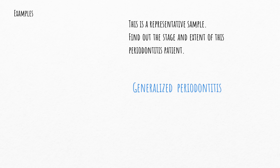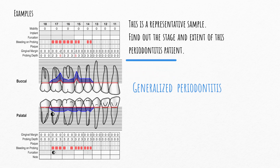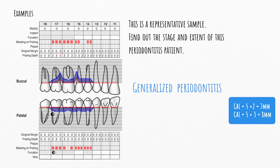What if recession and furcation were given? For example, if there is a recession of 2 on the 1.7 and recession of 3 on the 1.5, and furcation class 2 on the 1.7, we should use this equation: CAL equals pocket depth plus recession, recession being the distance from the cementoenamel junction to the free gingival margin. Adding pocket depth of 5 mm plus recession of 2 gives CAL of 7; CAL on the 1.5 will be 8, so it's either stage 3 or 4. Furcation class 2 could also be stage 3 or 4, but since the case does not seem to require complex rehabilitation and there are no extra factors indicating stage 4, the diagnosis here is stage 3.